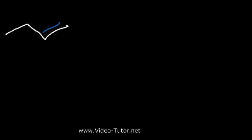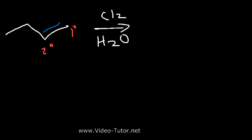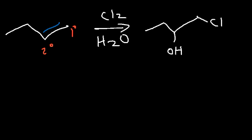What happens if we have the halohydrin reaction but with an unsymmetrical alkene? Let's say chlorine and water. We know we're going to get a Cl and an OH, but which element goes where? This is the primary carbon and this is the secondary carbon. Water is going to be the nucleophile in this reaction, and the nucleophile is going to go on the more substituted carbon, so we're going to get that product.